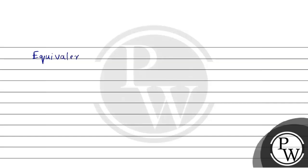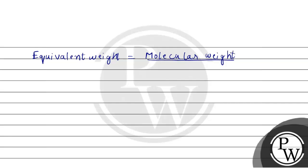Equivalent weight is equal to molecular weight divided by n-factor. So what do we mean by n-factor? The n-factor in the case of acids is simply its basicity.